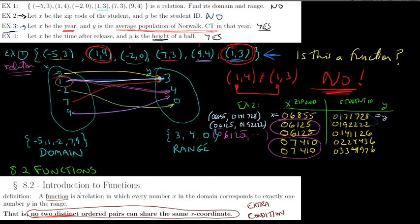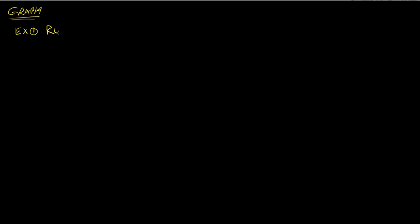So a function is a more specific type of relation. Not all relations are functions, but all functions are relations because they consist of ordered pairs. Now let's go back to relations and look at something called their graphs. You've graphed things before, so let's look at an example of the graph of a relation.